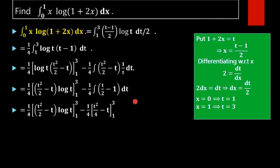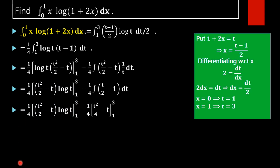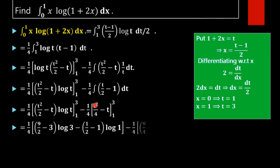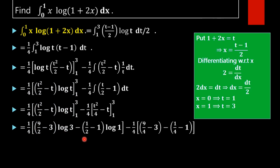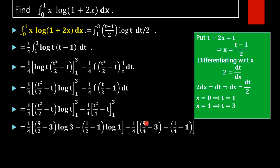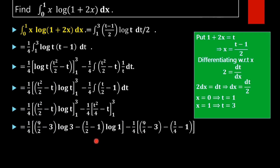Applying the limits from 1 to 3: first we apply the upper limit. We get (1/4) times: [9/2 minus 3] times log(3) minus [1/2 minus 1] times log(1), minus (1/4) times [9/4 minus 3] minus [1/4 minus 1]. So we compute each part to simplify and get the final result.